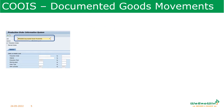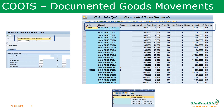In COOIS itself, we can also see documented goods movements — all the movements which happened with respect to a production order. Select the list 'documented goods movements'. For each order, we can see the material document number, item number, and movement type. The column for goods movement shows whether it is a planned goods issue, an unplanned goods issue, or a goods receipt from the production order.